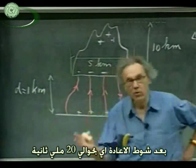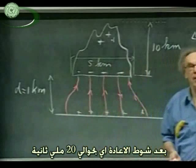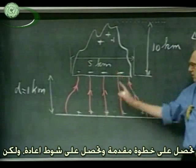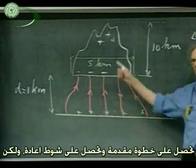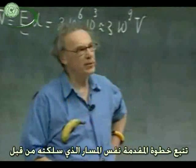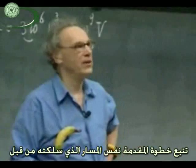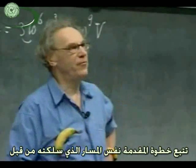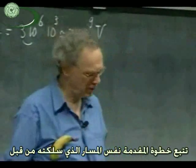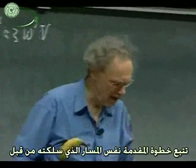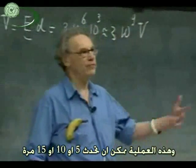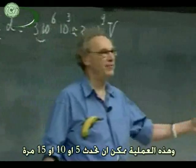After a return stroke, maybe 20 milliseconds later, this whole process can start again — you can get a step leader and you can get another return stroke. However, the step leader will now follow exactly the same path that was made before, because that's where the air is ionized, so that's where the conductivity is very high — that's the easiest way to go. And this process can recur 5, 10, maybe 15 times.